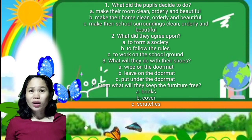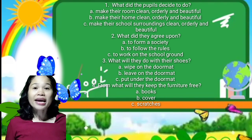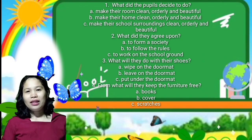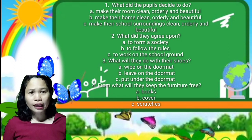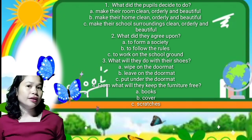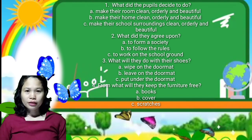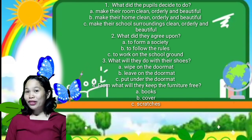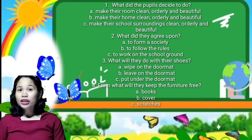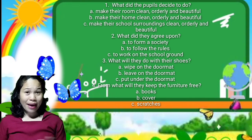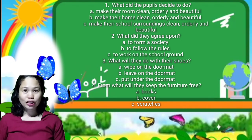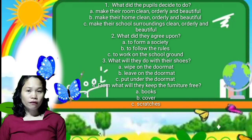Question one: what did the pupils decide to do? A — make their room clean, orderly, and beautiful; B — make their home clean, orderly, and beautiful; C — make their school surroundings clean, orderly, and beautiful. Number two: what did they agree upon? A — to form a society; B — to follow the rules; C — to work on the school ground. Number three: what will they do with their shoes? A — wipe on the doormat; B — leave on the doormat; C — put under the doormat. Number four: what will they keep the furniture free from? A — books; B — cover; C — scratches.